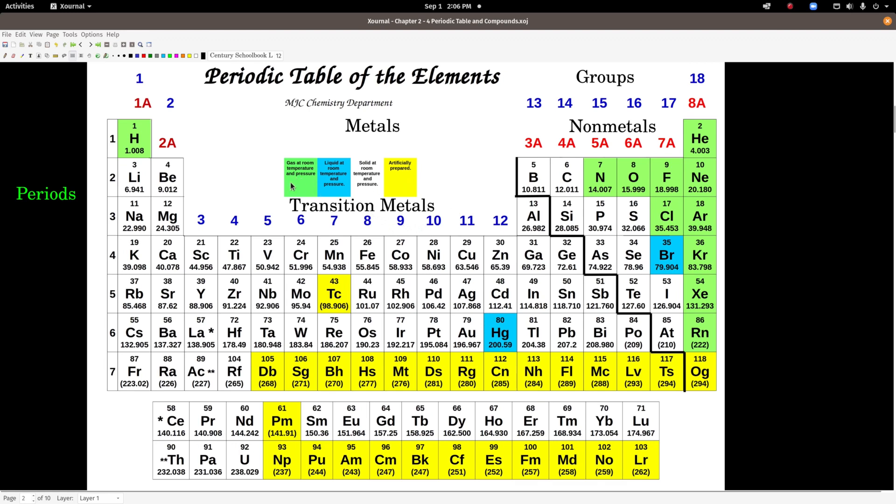We're going to look at other ways of categorizing elements. In this one, the box is green if it's a gas at room temperature and pressure. Blue is a liquid, white is solid, and yellow means it's artificially prepared.